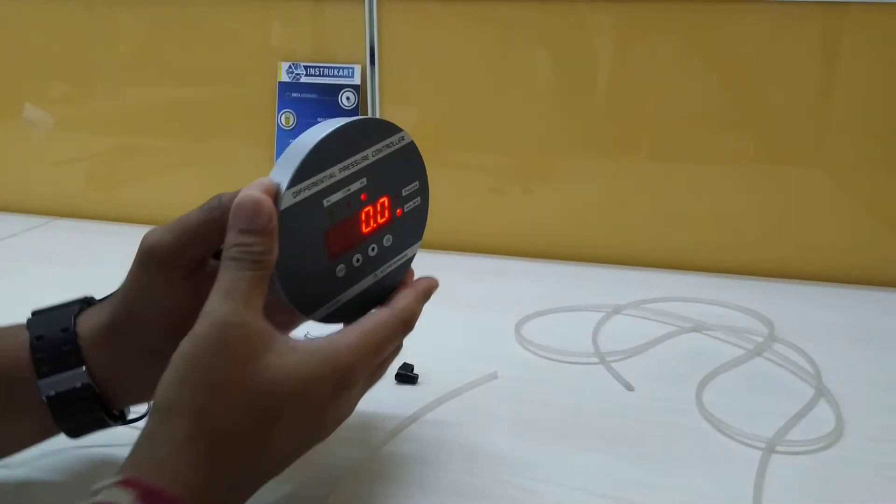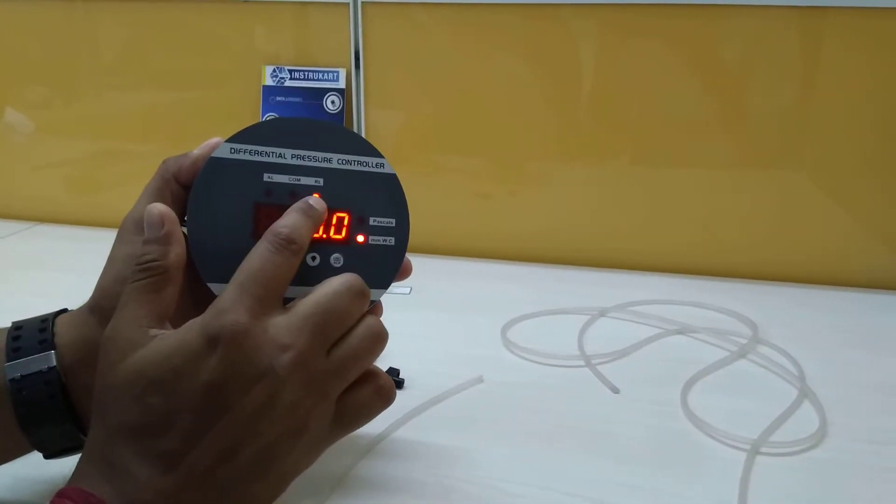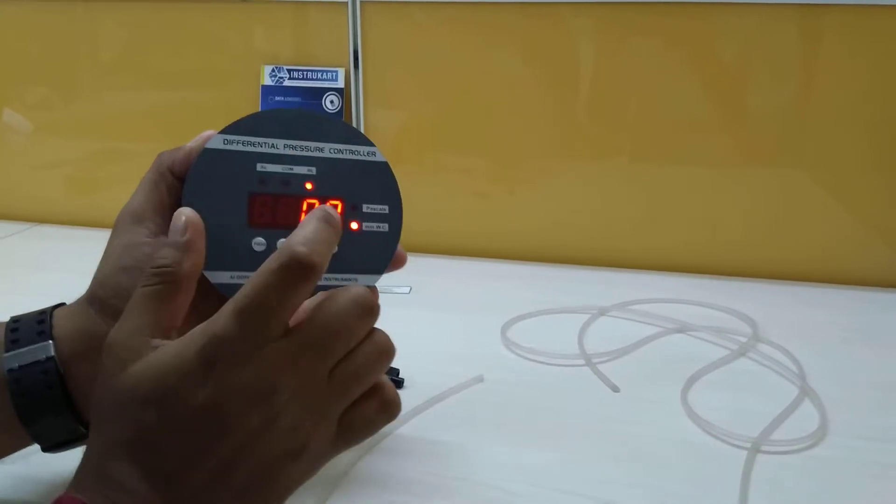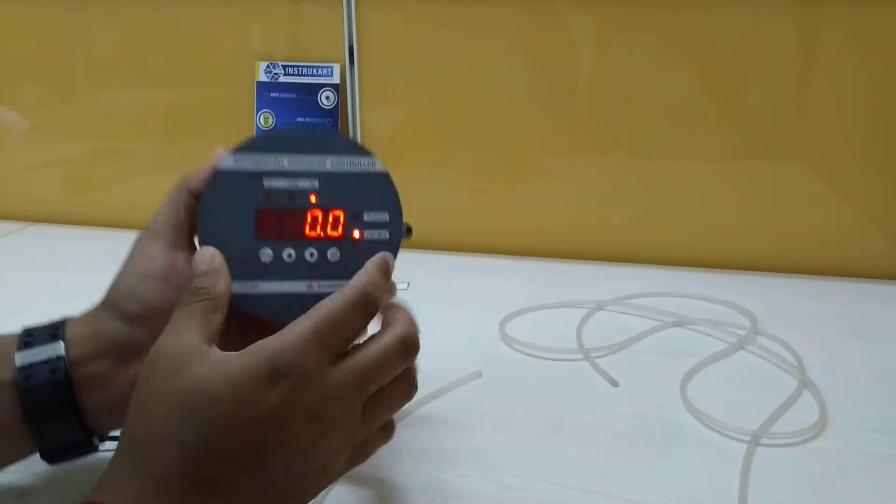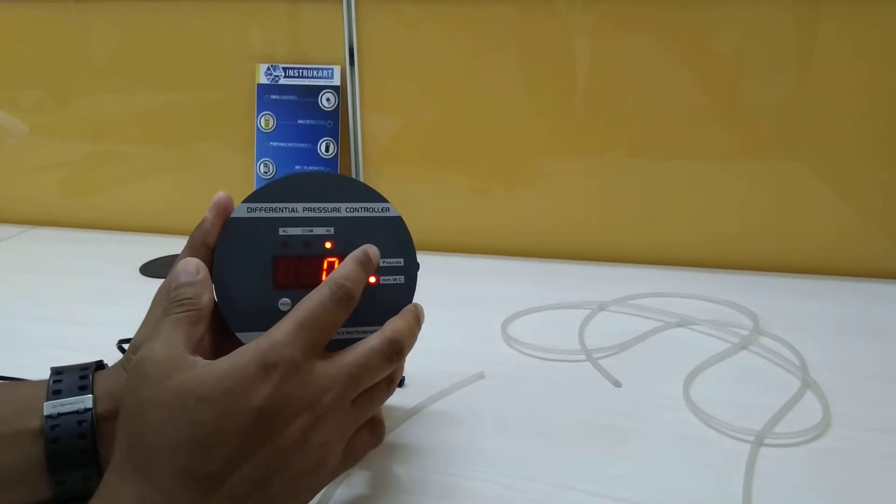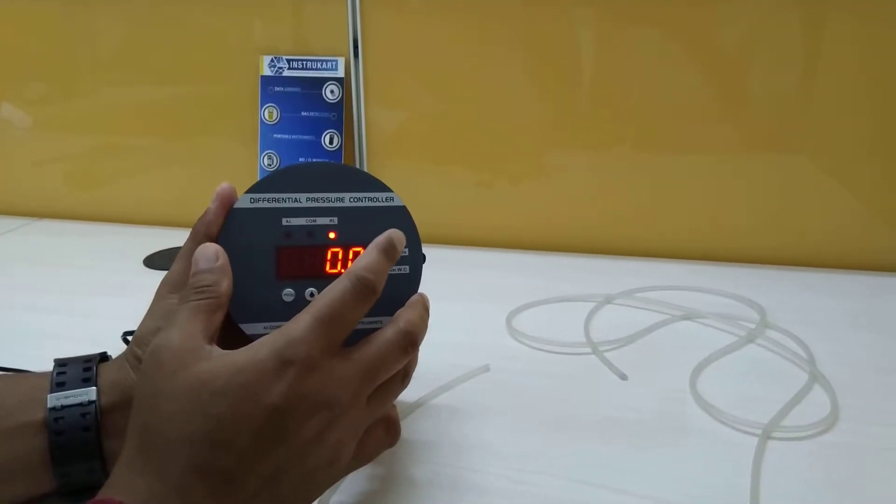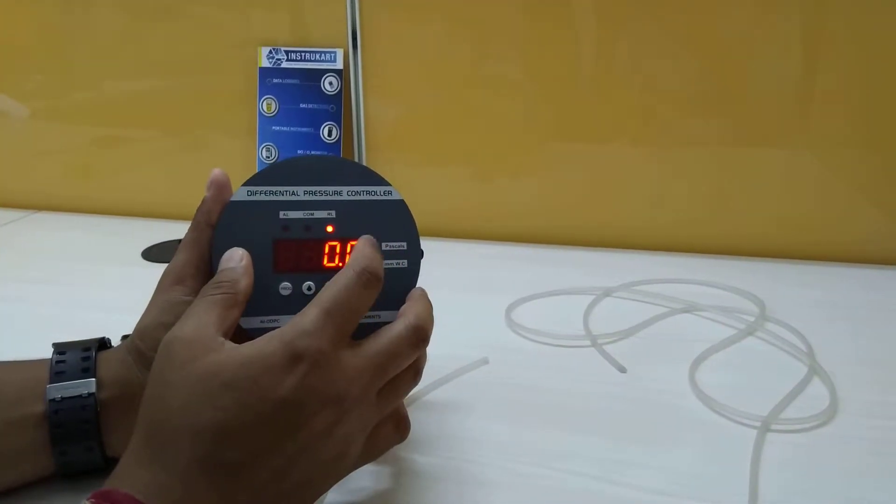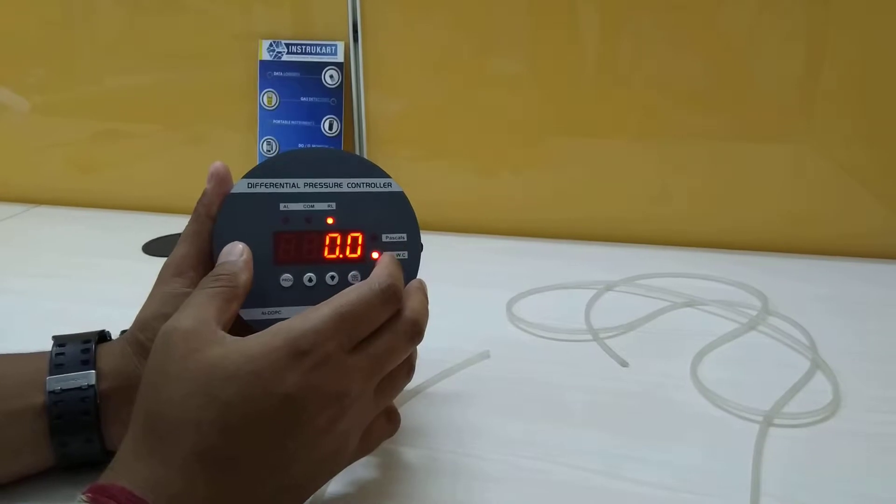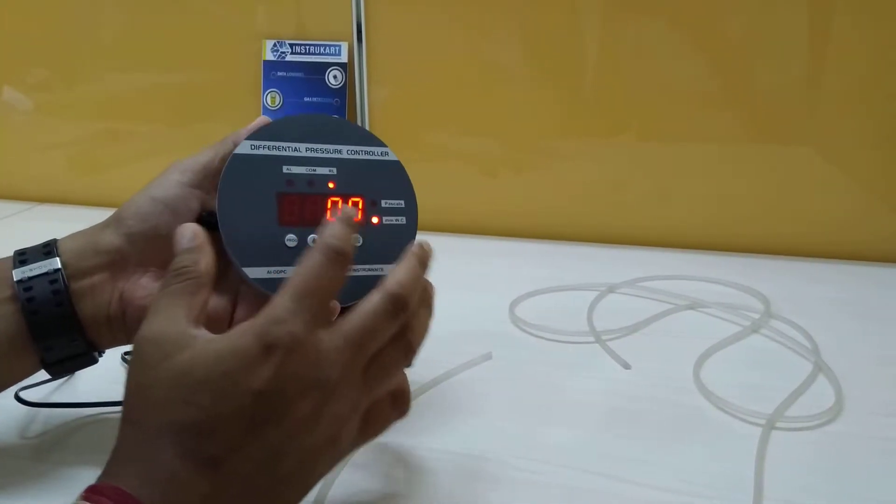We see the same fit and finish except for the relay which has been added to this instrument. The relay's purpose is to control and command any external instrument at any setpoint. Other than that, it has the same functions and features as the differential pressure gauge.